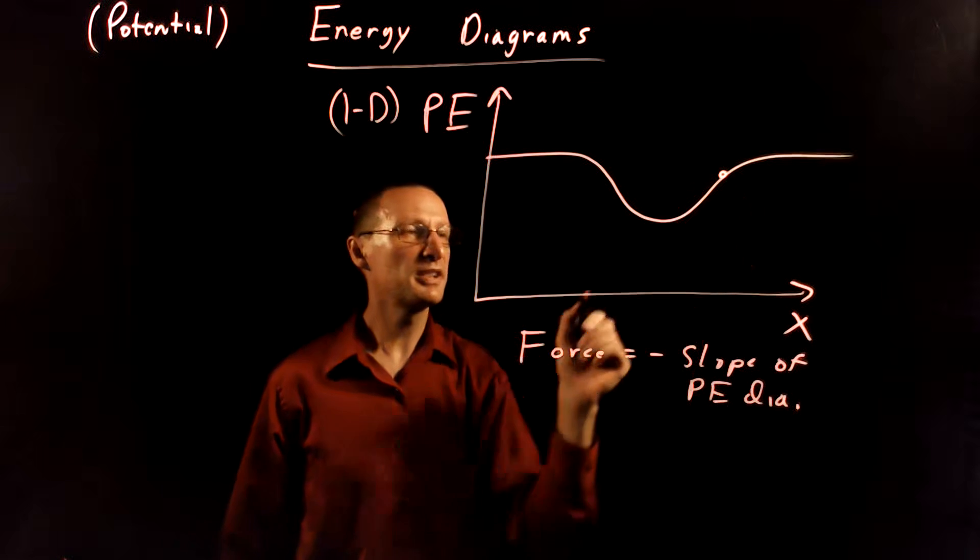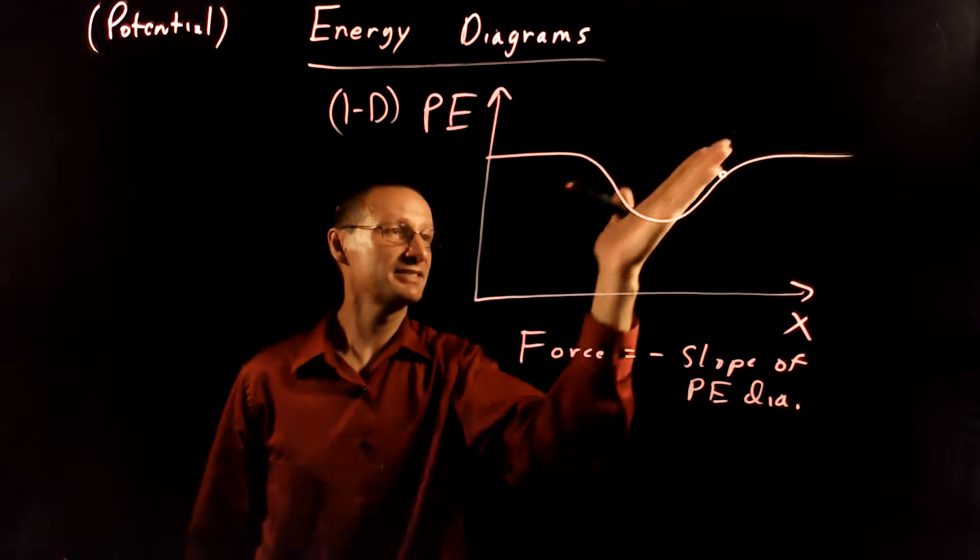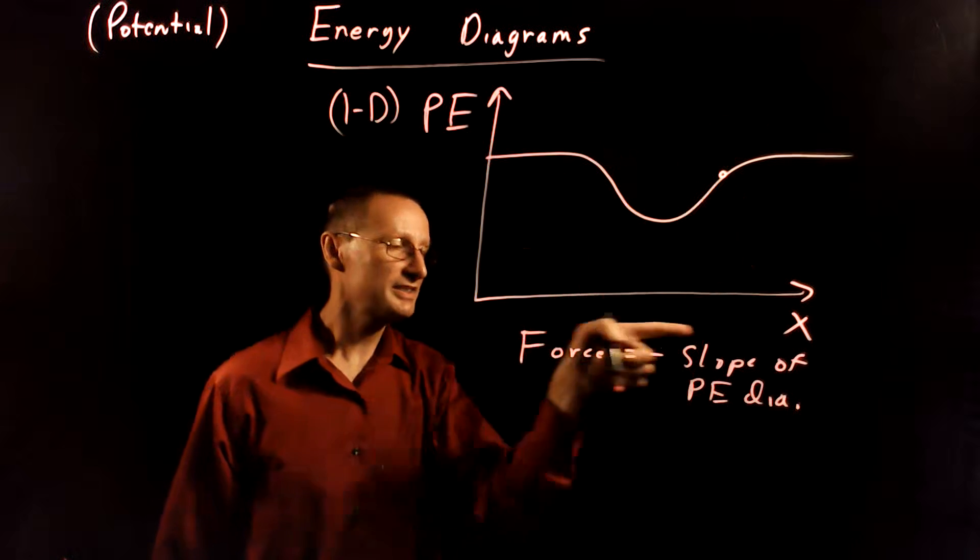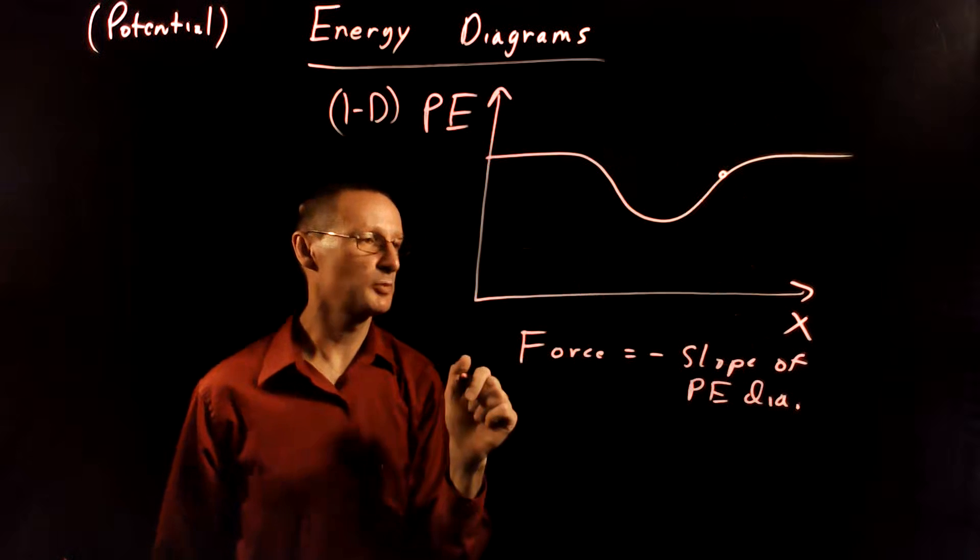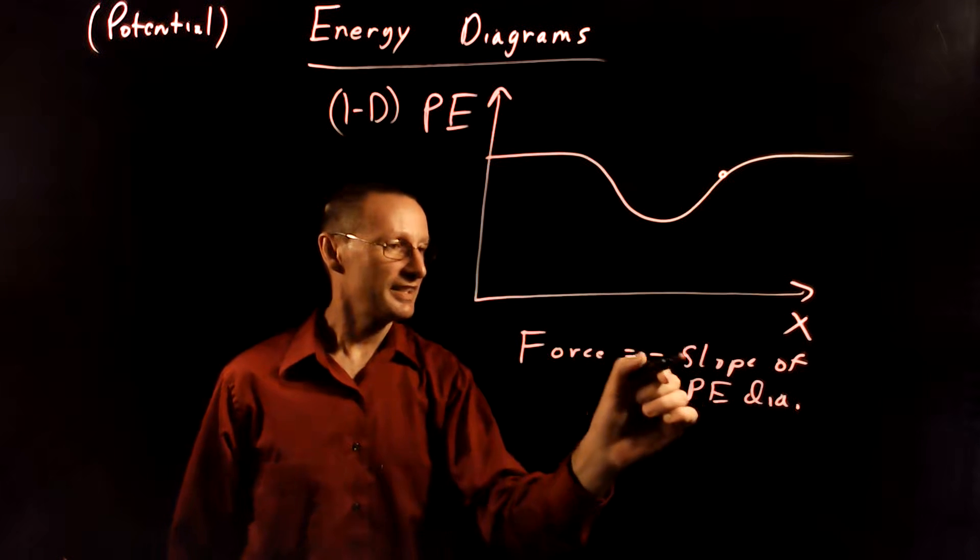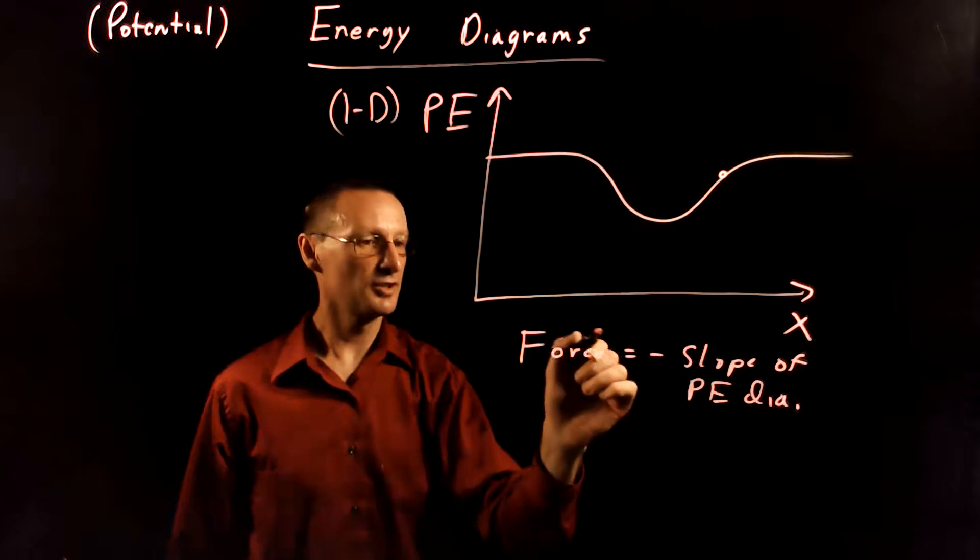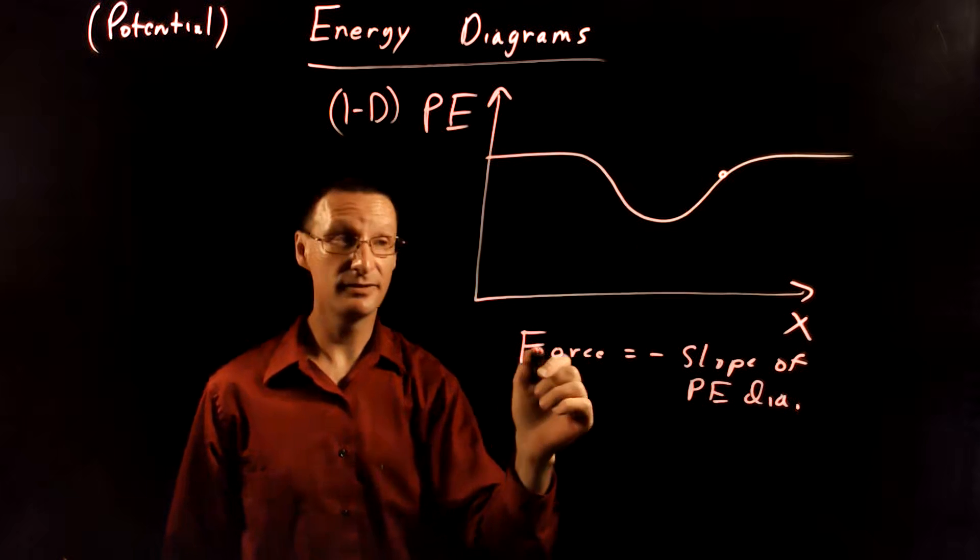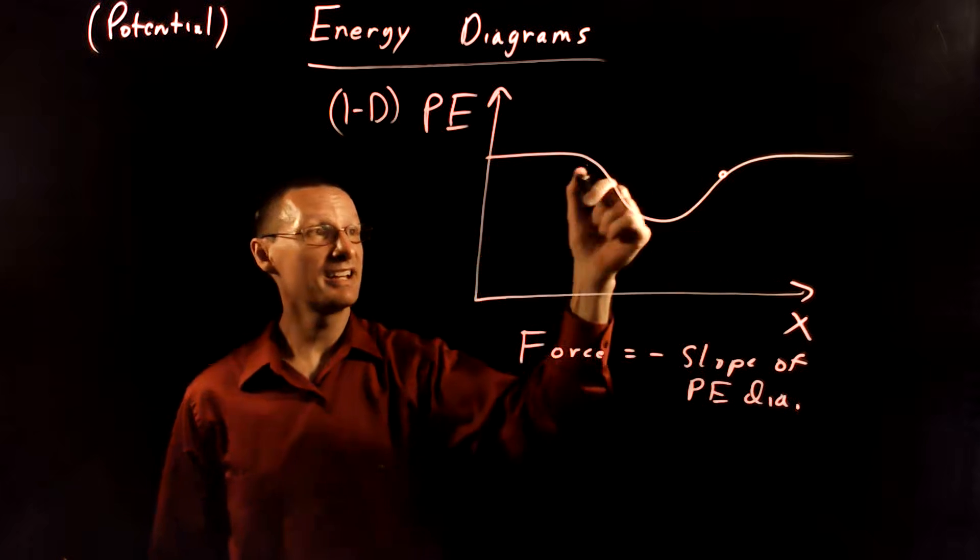Okay, so if I put the ball here, this is a positive slope. Positive X is that way, negative X is this way. I take the negative of that positive slope. That means the force is negative, which means it points this way in the negative direction.